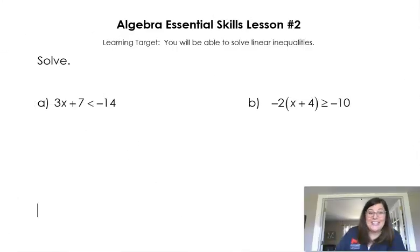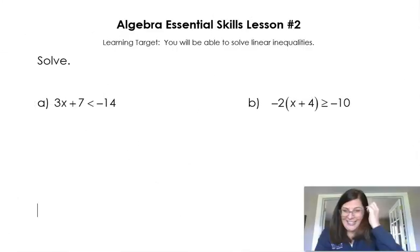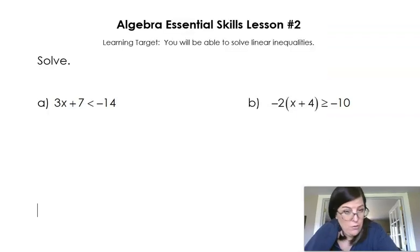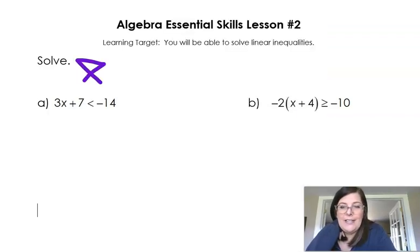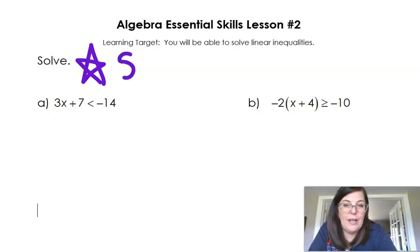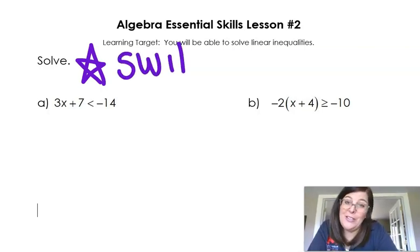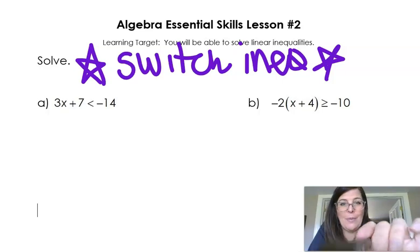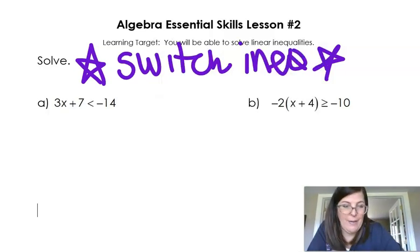Alright guys, essential skill number two, it's getting exciting here. I want you to be able to solve inequalities. So basically, solving an inequality is almost exactly the same as solving an equation, except when you sometimes have to switch the direction of the inequality. When does that happen? That happens if you multiply or divide by a negative. We're going to go through these problems, and we've just got to remember, just like solving an equation, except if you multiply by a negative.